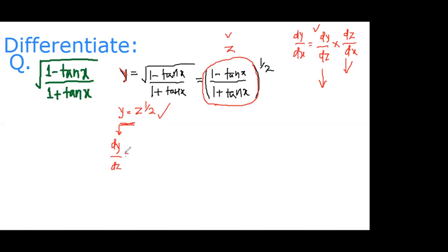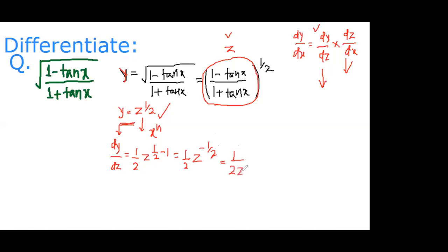Differentiating y = z^(1/2) with respect to z, using the formula for x^n, we get dy/dz = (1/2) z^(1/2 - 1) = (1/2) z^(-1/2), which we can write as 1/(2√z).